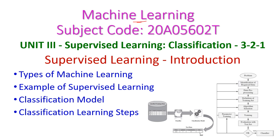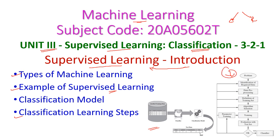From today's machine learning class we will start our second part of third unit, that is supervised learning. In supervised learning there are two categories: first one is classification and second one is regression. In the third unit we are having only classification, and in today's class we will see the supervised learning introduction, types of machine learning, examples of supervised learning, classification model, and the classification learning steps.